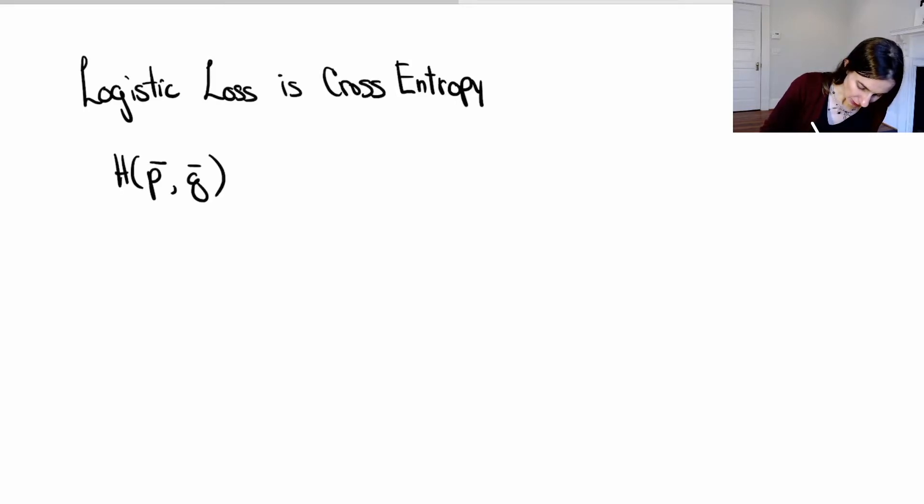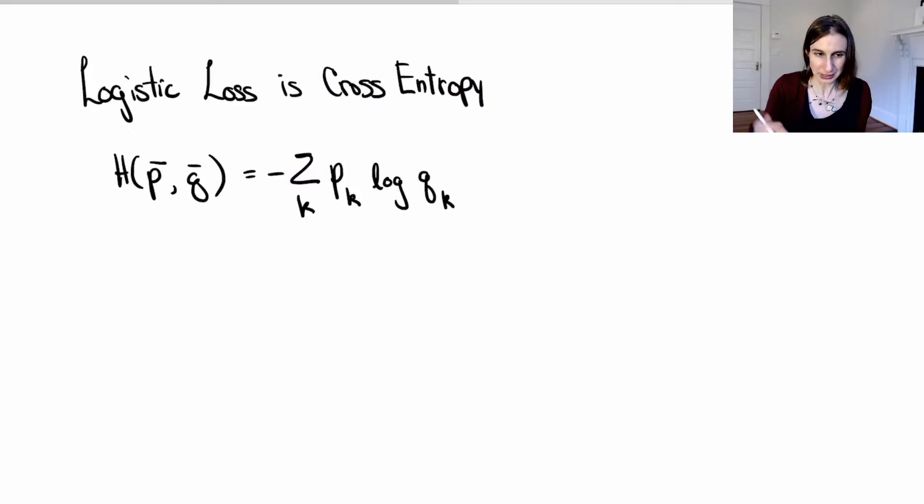So it's H(p,q), where p and q are two discrete probability distributions, equals the sum over all the outcomes of the probability times the probability of the outcome from the first distribution, and then log q_k, and that's a probability that comes from the second distribution. Before, with regular entropy, it's just p_k log p_k.